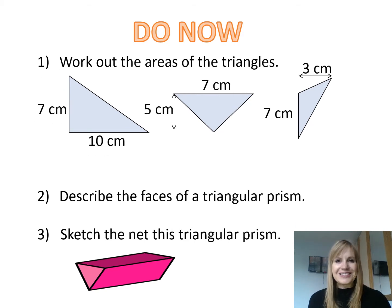Here are the answers. For the first one it has an area of 35 centimeters squared. The second triangle has an area of 17.5 centimeters squared. The third triangle has an area of 10.5 centimeters squared.